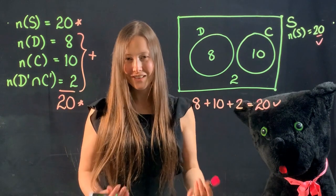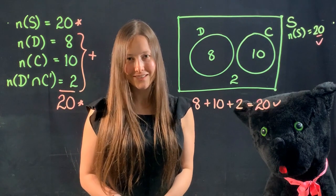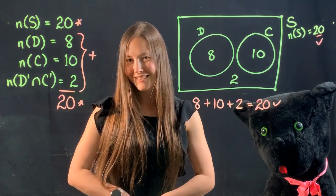All right. So everyone, that was the example on creating a Venn diagram involving disjoint sets. Hope to see you again soon. Have a good day.